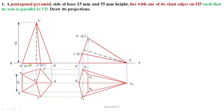Always remember: if slant edges are on HP, one corner touches HP — that is the meaning. If it is a triangular face on HP, one edge is on HP. If a slant edge is on HP, one corner is on HP. That is why we kept corner D on the XY line, making sure slant edge O'D' lies on HP. Based on this condition, we solved this pentagonal pyramid problem. If you have any queries or doubts, type them in the comment box — I am ready to answer at any time.